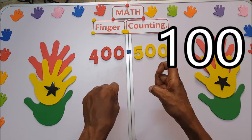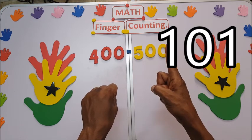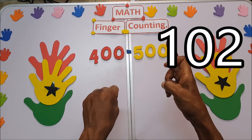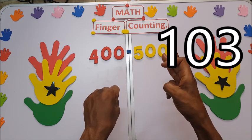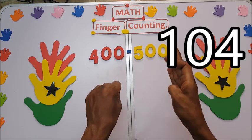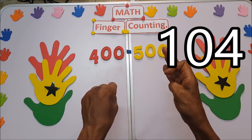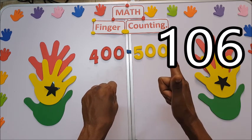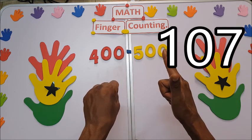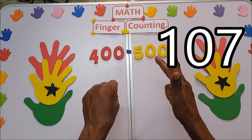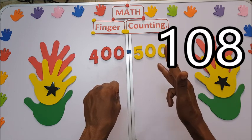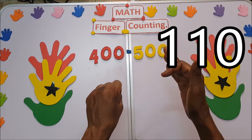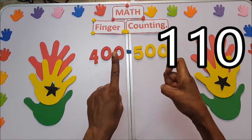100, 101. You bend it again: 102, 103, 104, 105, 106, 107, 108, 109. Then we have 110.